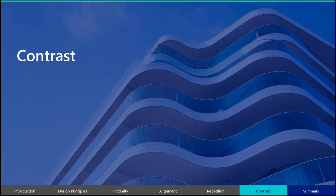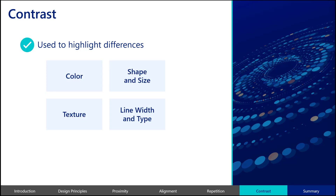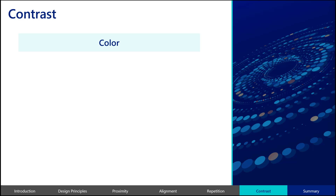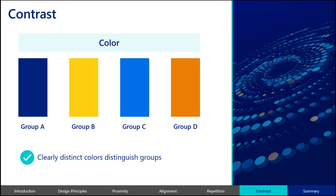The fourth principle of design particularly relevant to data visualization is contrast. While repetition is used to highlight similarities, contrast highlights differences in the data. You can create contrast in your visualizations through the use of color, shape, size, texture, and lines. Color can be an important part of your data visualization design. Color can be used to distinguish groups or categories from each other, represent data values, or to highlight specific elements in the data. When using color to distinguish groups, choose high contrasting colors that are clearly distinct from each other and do not create a sense of order or ranking.